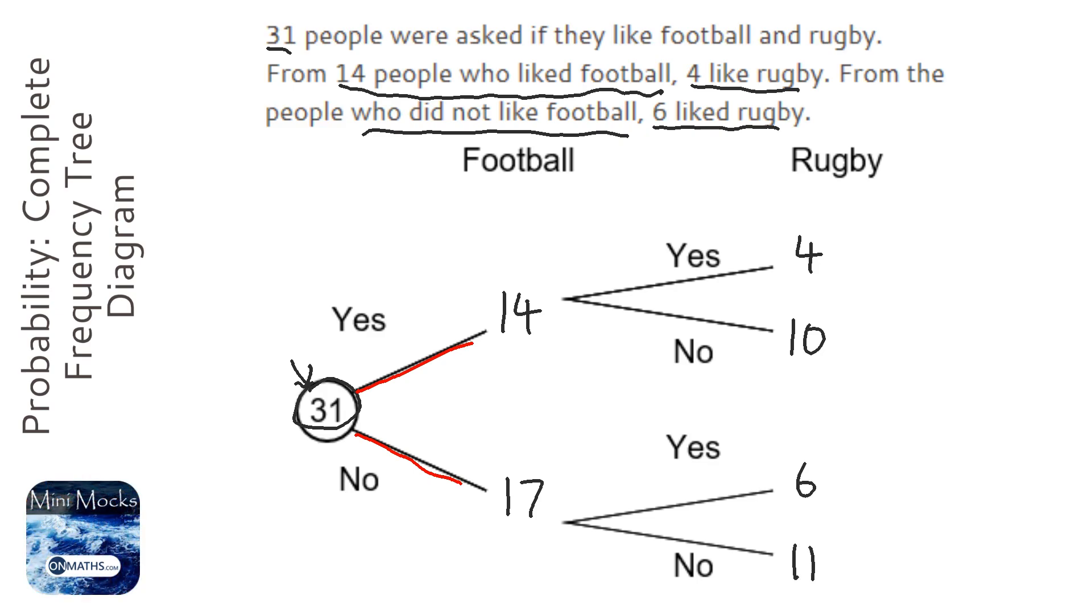Now you can check this by adding up all of the ones over here. So if you add these all up, they have to add up to make 31, because every single one of those 31 people need to end somewhere on the right hand side, and they can't end in two places.